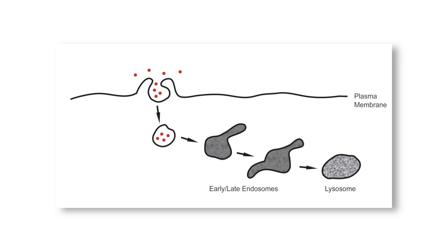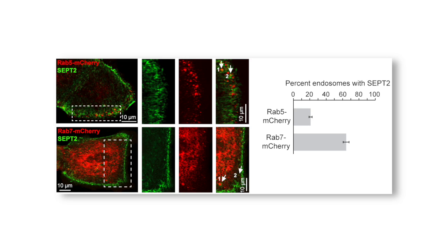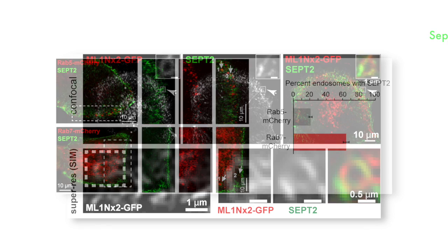Macropinocytosis is involved in many processes, including nutrient uptake and antigen presentation. After they are formed, macropinosomes mature by fusing with each other and with endosomes, before eventually delivering their fluid phase cargo to lysosomes. Early macropinosomes preferentially associate with RAB5, whereas more maturing macropinosomes contain RAB7, and we observed that septin-2 had a higher level of co-localization with RAB7.